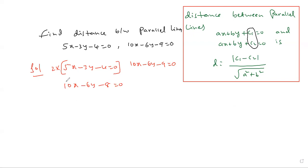Now observe the first and second equations. X and y coefficients are the same, only constants are changed. Now d equals modulus of c1 minus c2, which is negative 9 minus negative 8.